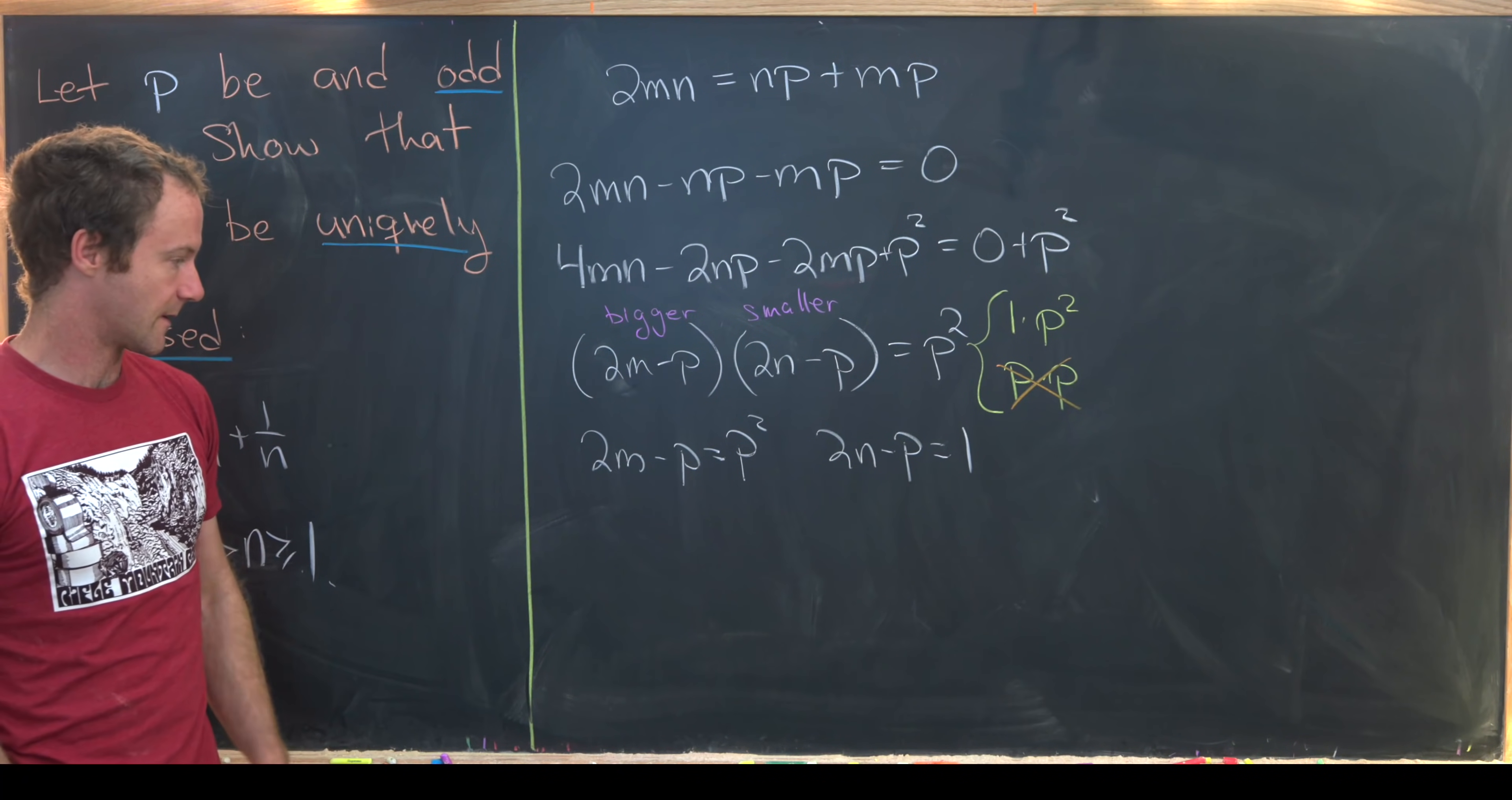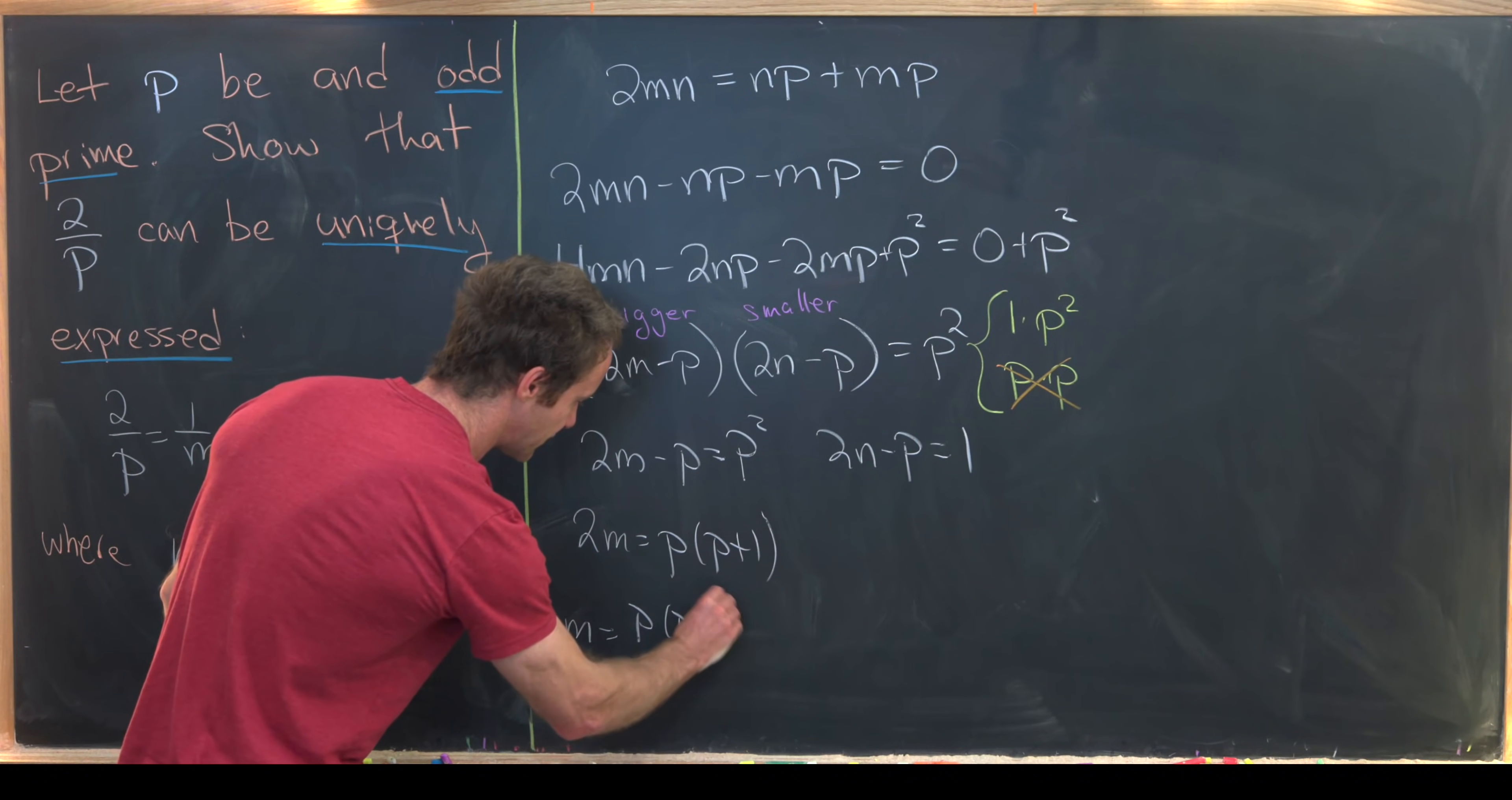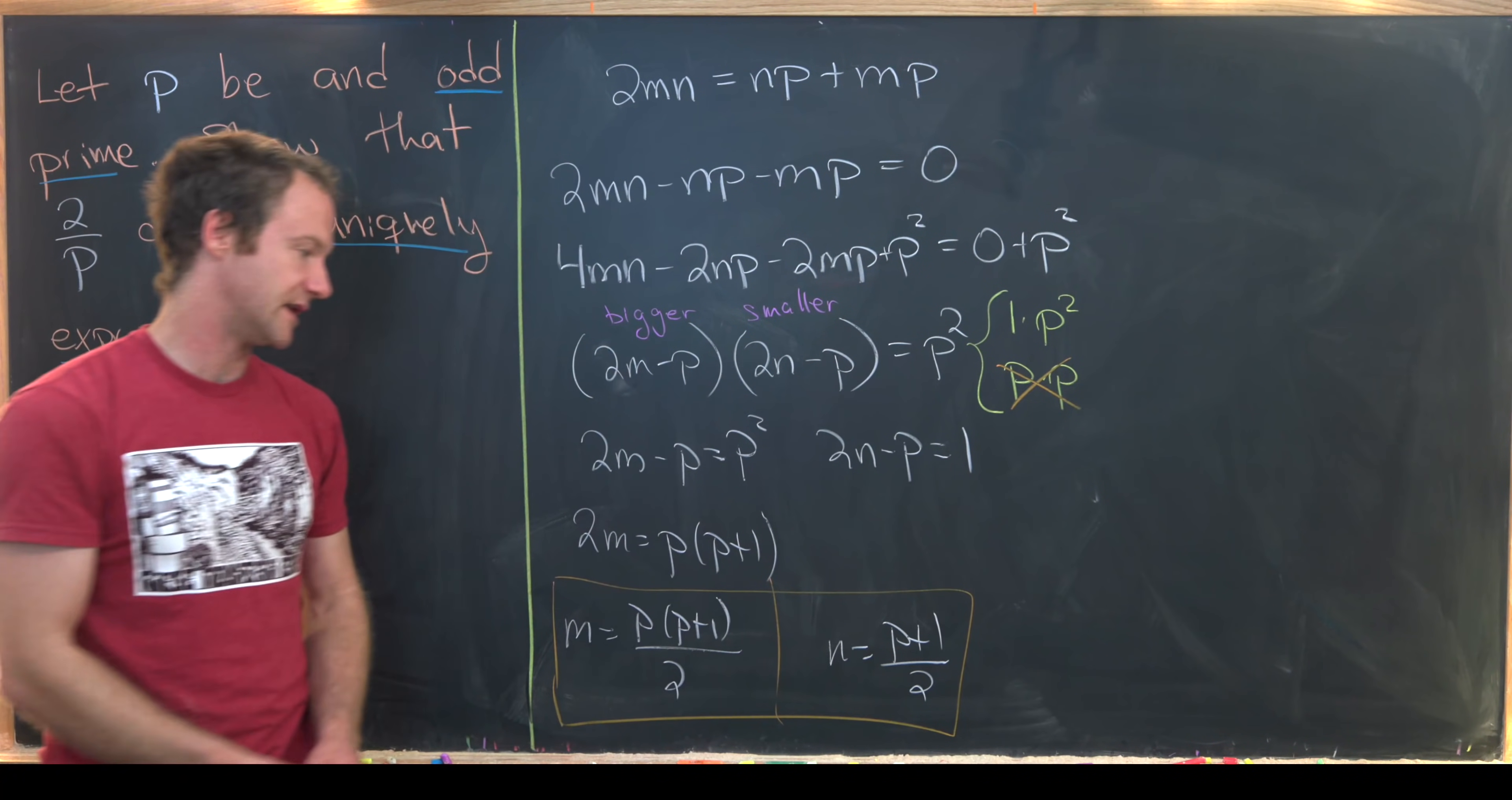Now where can we go from there? Well from here we can see that 2M is equal to P times (P + 1). So what did I do there? I just did some factorization after moving things over. That means that M is equal to P(P + 1) all over 2. And then similarly over here we can see that N is equal to (P + 1)/2. So there we have our two expressions for M and N.